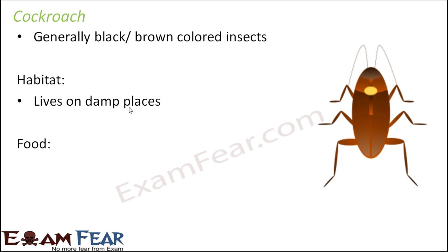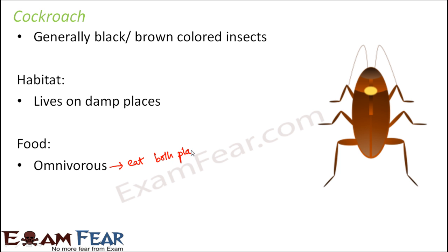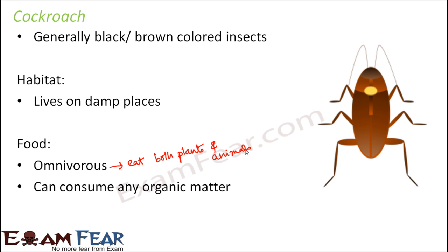If you talk about its food, the cockroach is omnivorous. It eats both food grains, cereals, and other small insects — so it eats both plant products as well as other animals. Omnivorous animals are those which eat both plants as well as other animals, and cockroaches can actually consume any organic matter.